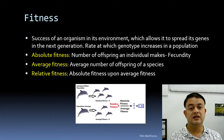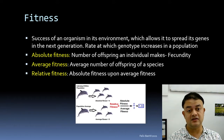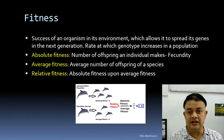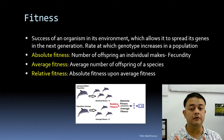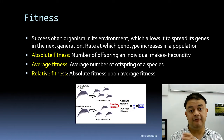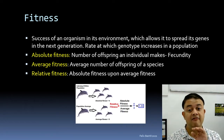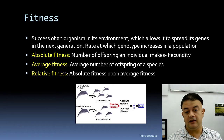There are three kinds of fitness. Absolute fitness is the number of offspring an individual produces — also known as fecundity. For example, if you have two kids, your absolute fitness is two. Average fitness is the average number of offspring of a species. Relative fitness is the ratio of absolute fitness to average fitness.